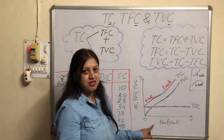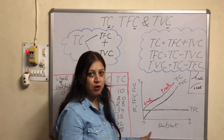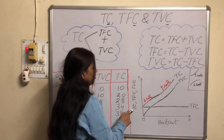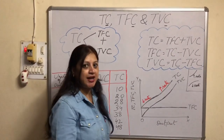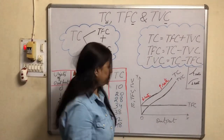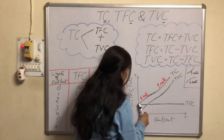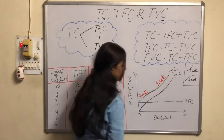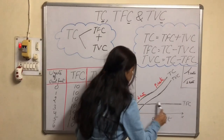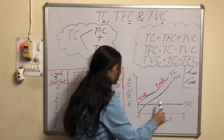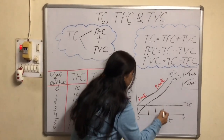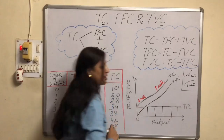Now we come to the diagram. On the x-axis I have shown units of output, and on the y-axis I have shown TC, TFC, and TVC — all three costs drawn in the same diagram. You can see that this is the TFC curve, the total fixed cost curve, and it is constant — parallel to the x-axis, meaning at every level of output it remains the same.